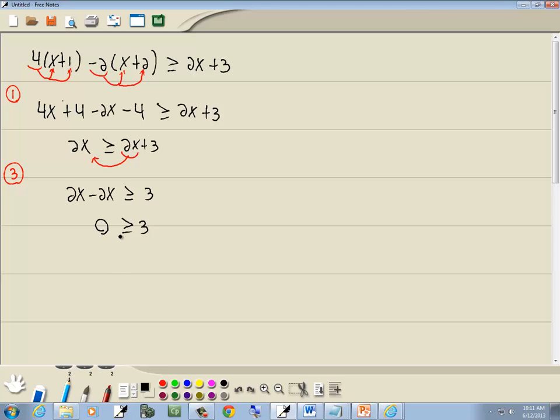Well, this is one of our oddball cases. You have to ask yourself, when is 0 greater than or equal to 3? Well, 0 is never greater than or equal to 3. So if you come up with something that can't be, that's not true, then it's a no solution. There's no answer.